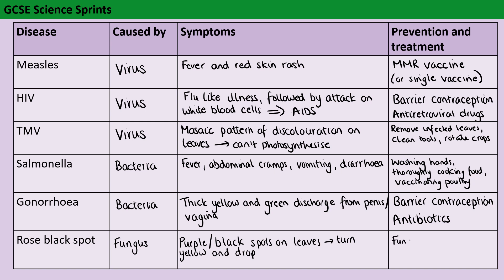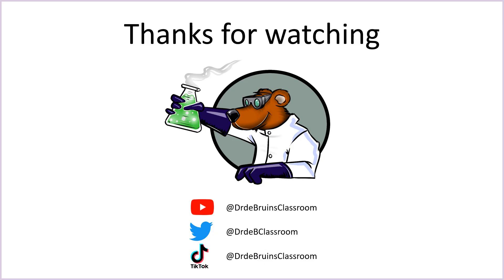With rose black spot, a bit like TMV, we're going to think about removing leaves, but we can also treat it with fungicides. Thank you very much for watching and I hope to see you back again on Wednesday for the next chemistry instalment in this science sprint series. If you are finding the videos useful, then don't forget to like and subscribe for more GCSE science videos coming soon.